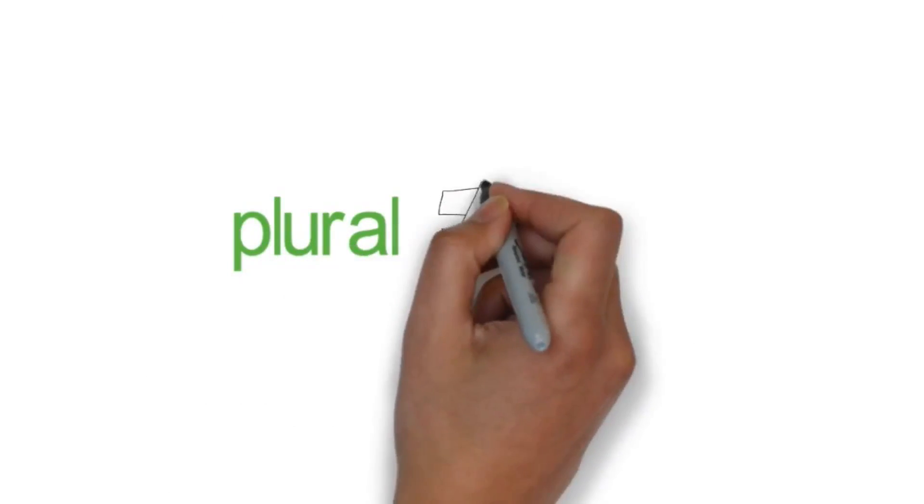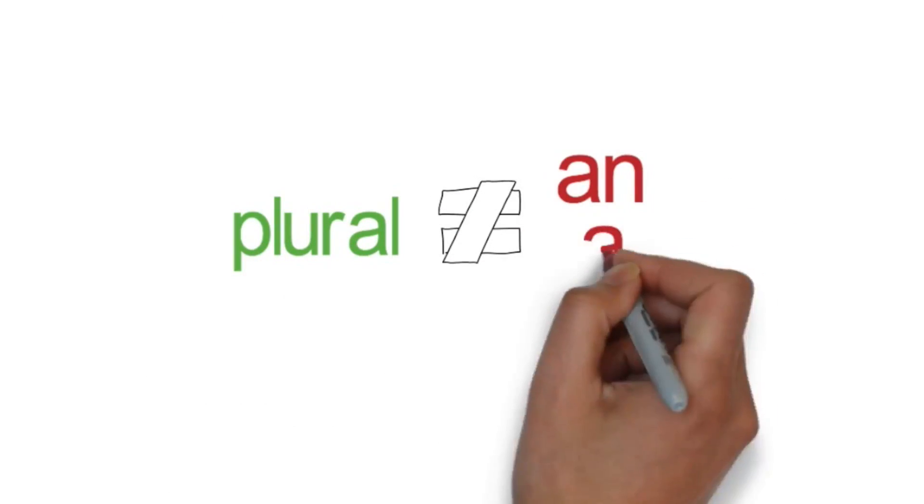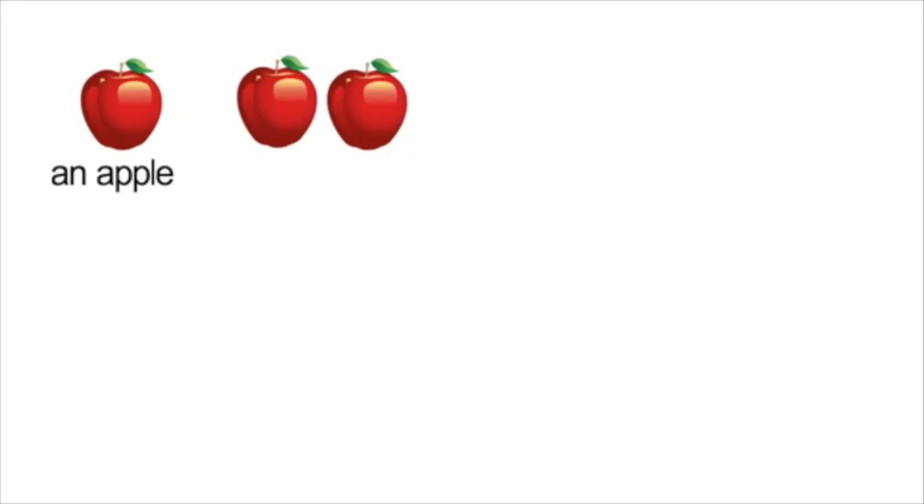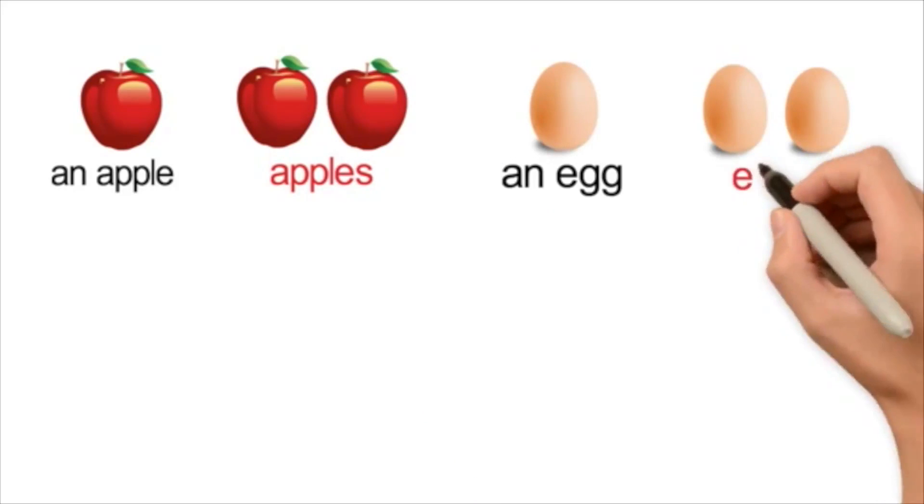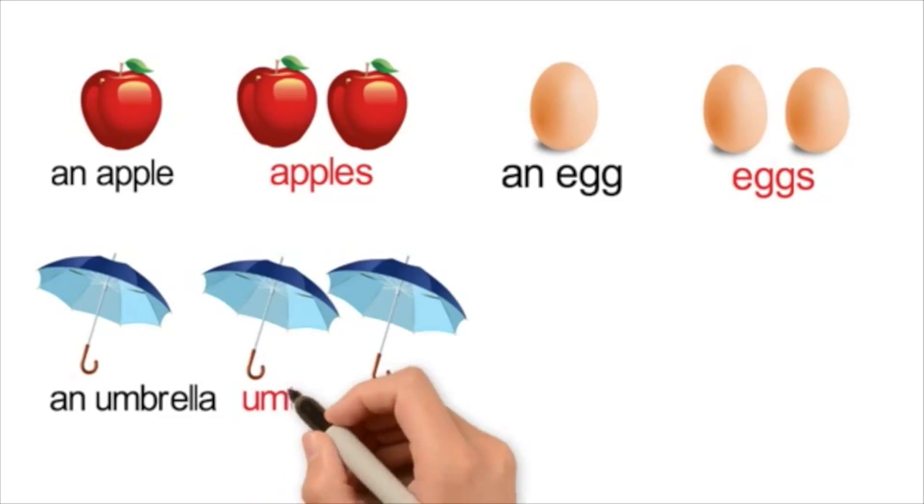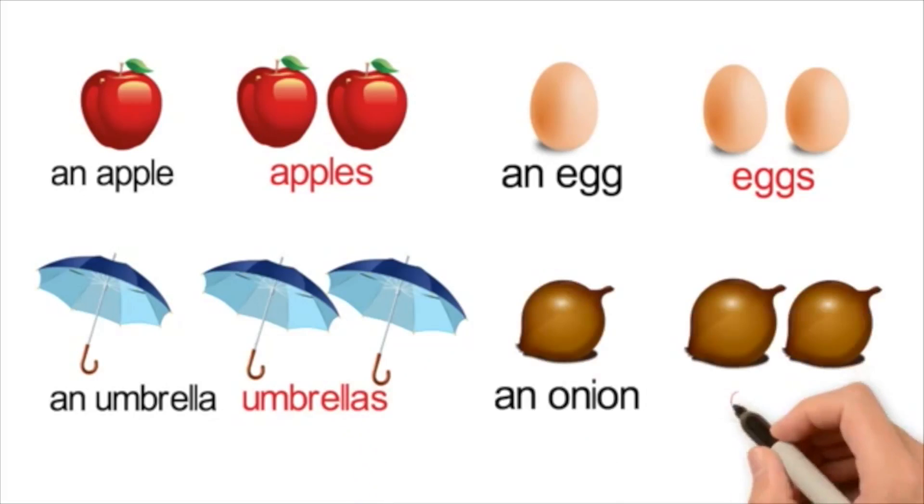However, if it is a plural, it does not have an or a. So, an apple becomes apples, an egg becomes eggs, an umbrella becomes umbrellas, an onion becomes onions, an igloo becomes igloos.